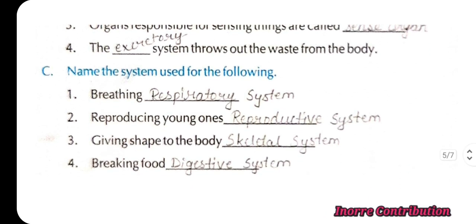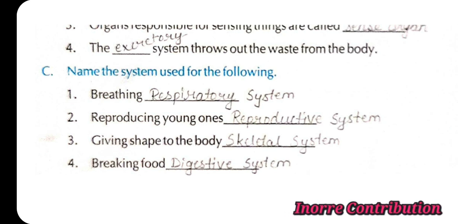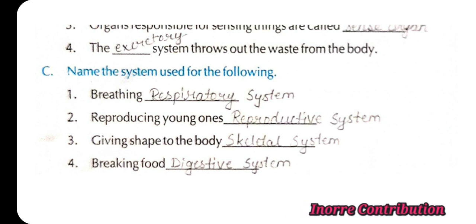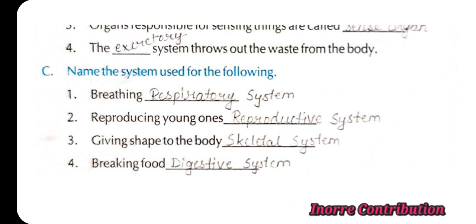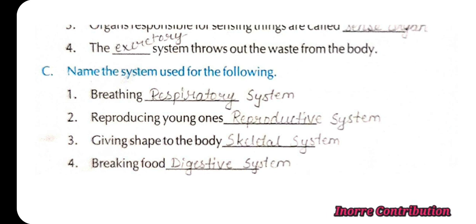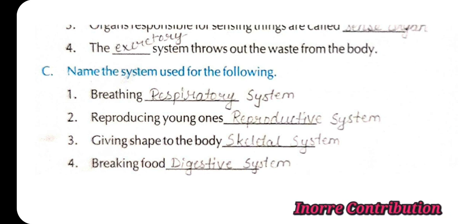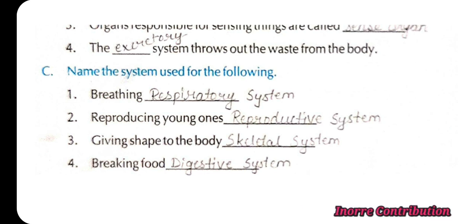Name the system used for the following. First, for breathing: Respiratory system. Second, for reproducing young ones: Reproductive system. Third, for giving shape to the body: Skeletal system. Fourth, for breaking down food: Digestive system.